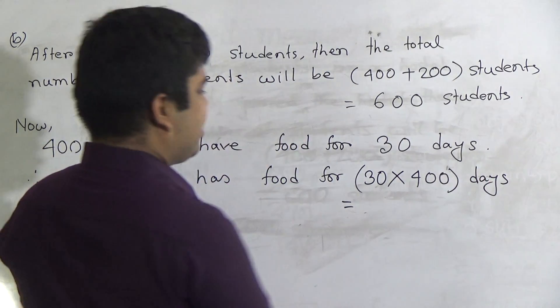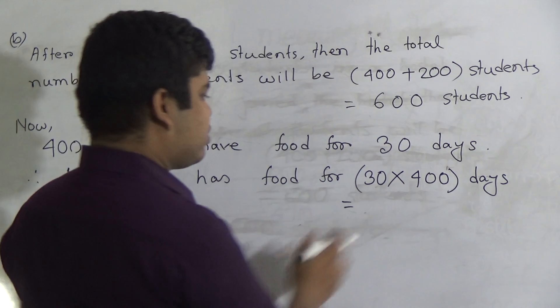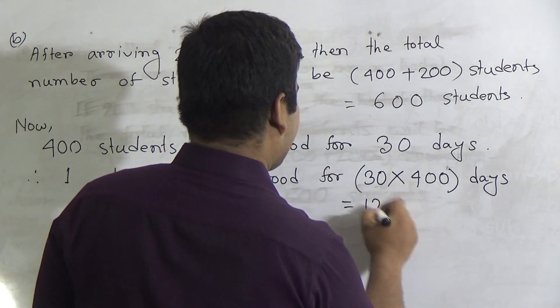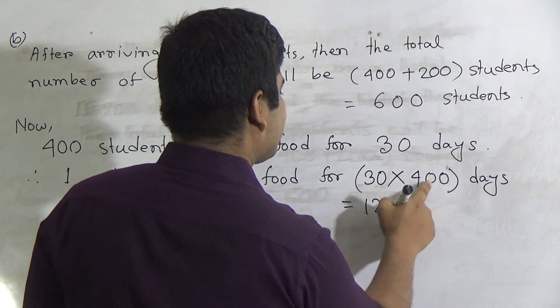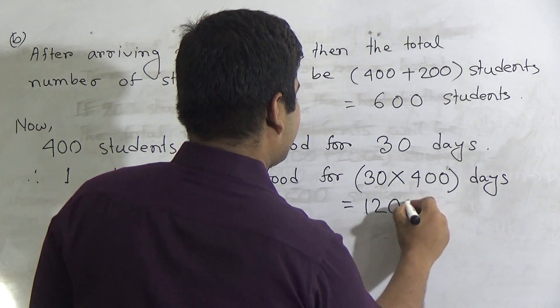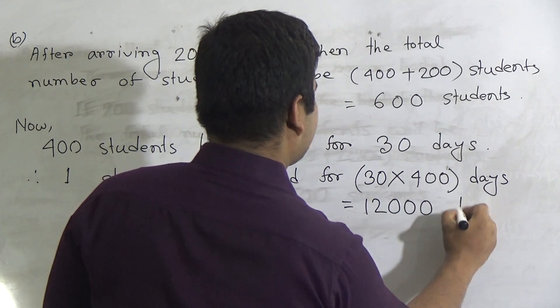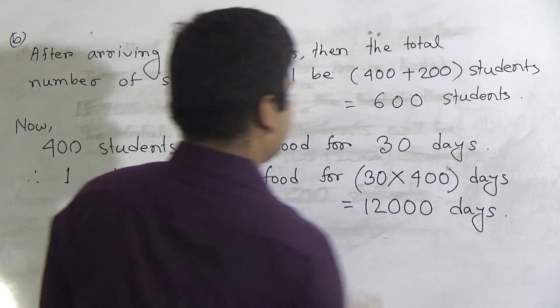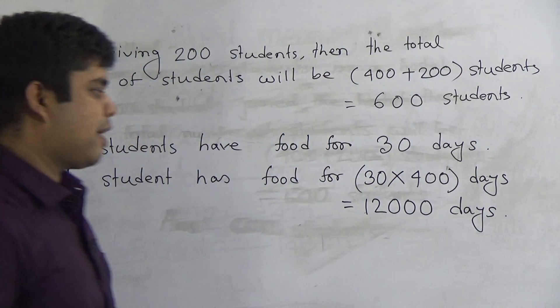We use the easy multiplication method. 30 multiplied by 400 gives us 12,000 days.